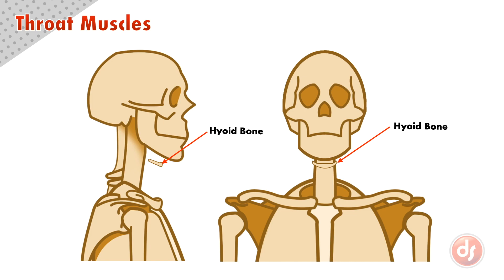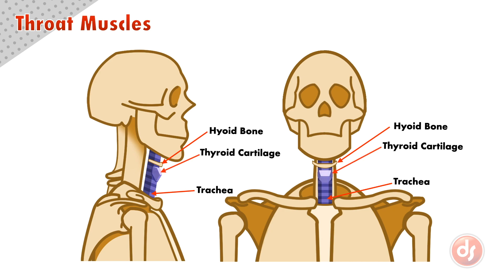Running underneath the hyoid bone is our trachea, which is the tube at the front of our throat that allows us to breathe. Sitting on top of the trachea are two prominent masses: the thyroid cartilage and the cricoid cartilage. These two sections of cartilage protect our vocal cords and change the pitch of our voice when moved.